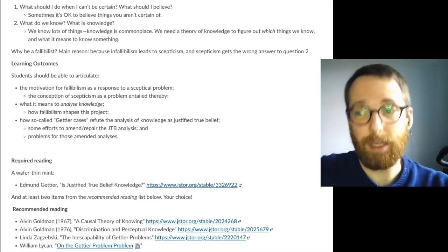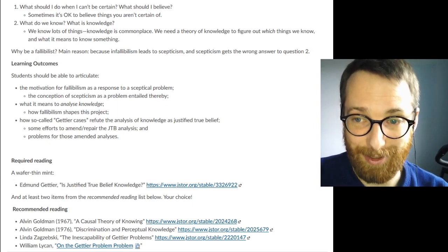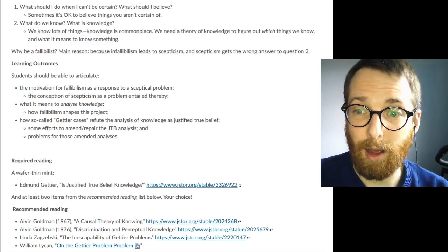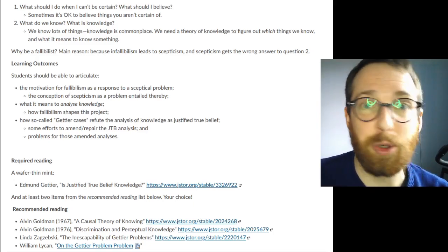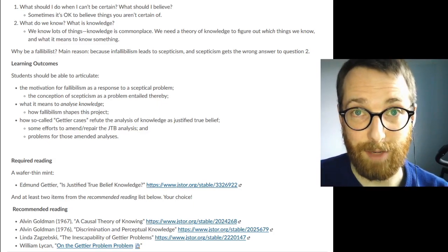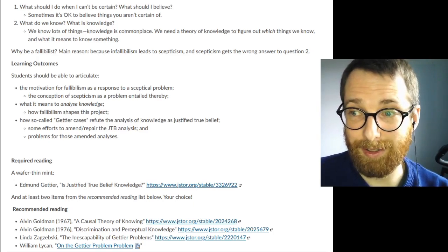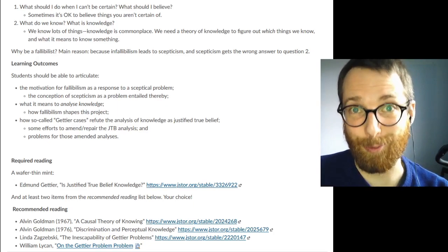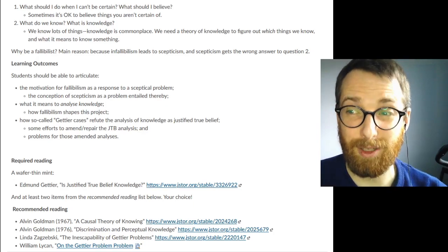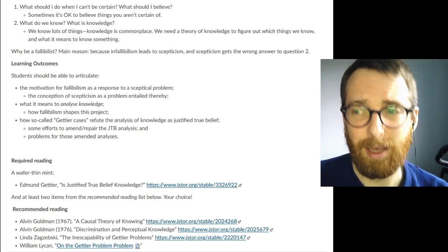We were reading Gettier because when he published this little two page thing in 1963, there was then in Anglophone philosophy, a massive explosion of responses to Gettier's paper, attempts to repair the justified true belief analysis of knowledge. Consensus today is none of those work. What does that mean? Does that mean knowledge can't be analyzed? Does that mean just that we are all flawed creatures? We'll talk a bit about that.